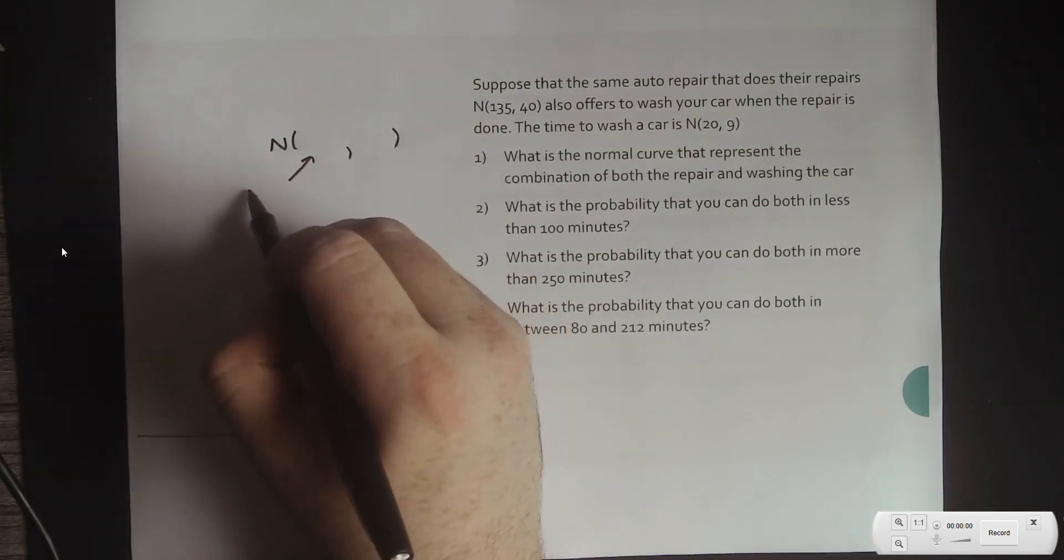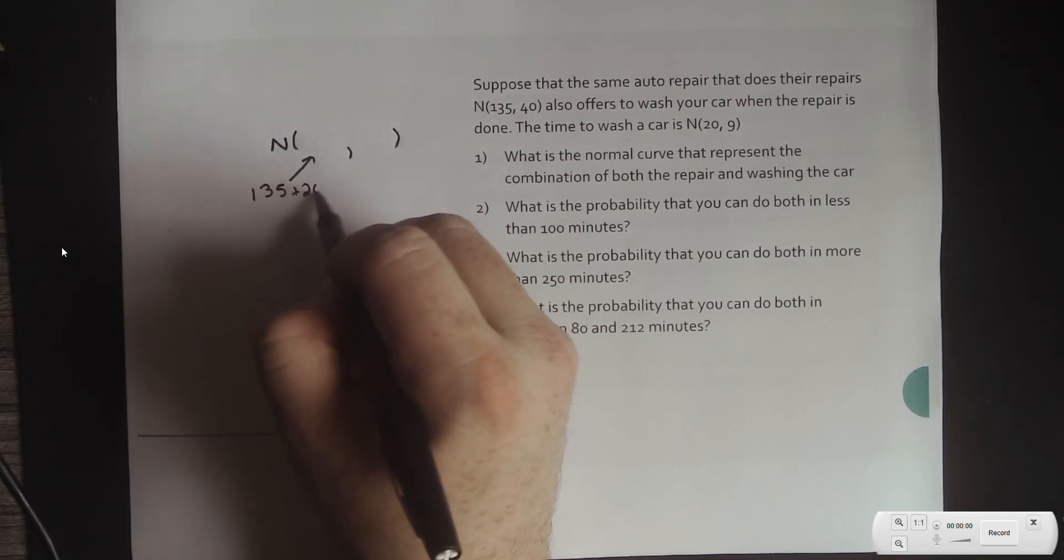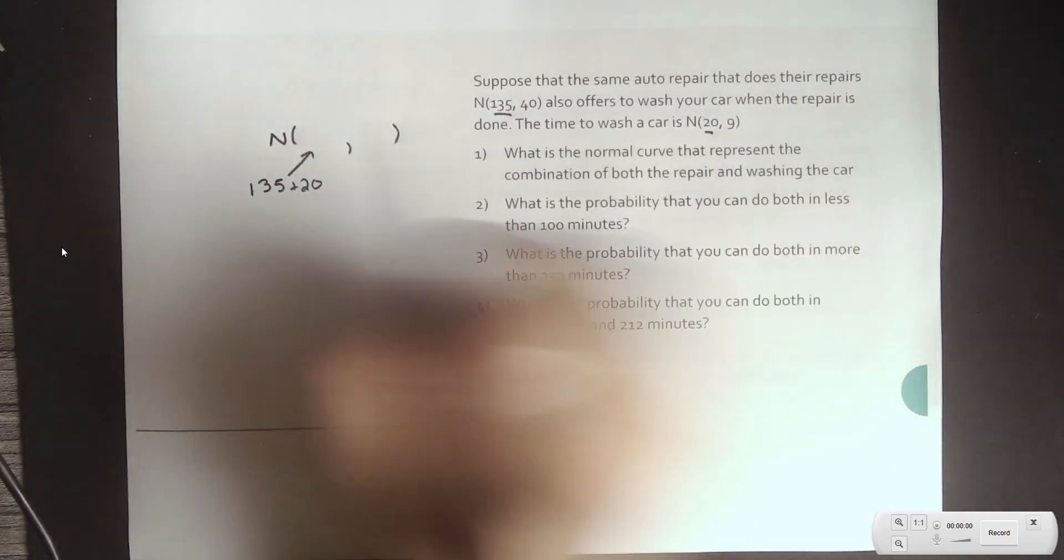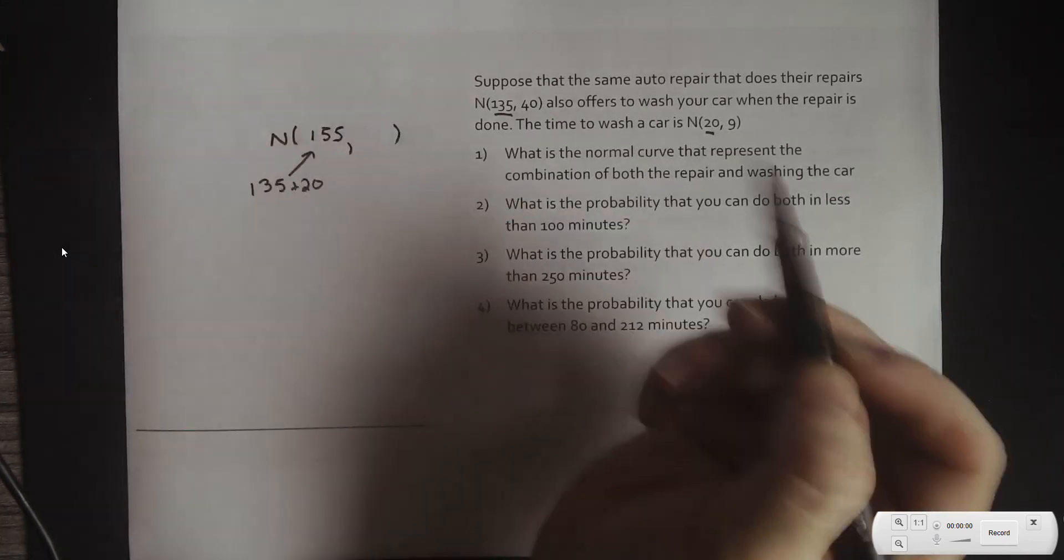So, when it comes to expected value, all I need to do is just add the two expected values from the previous example. So, 135 to 20, or I'm 20, makes 155. So, all I have to do is add those together.